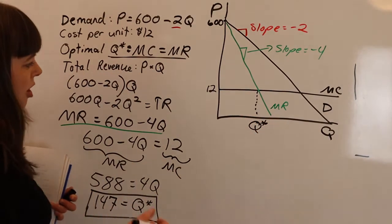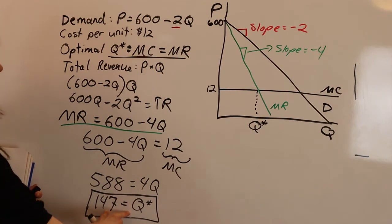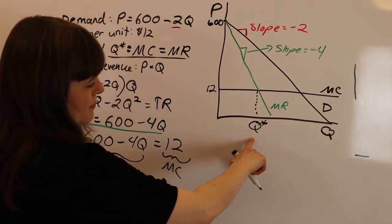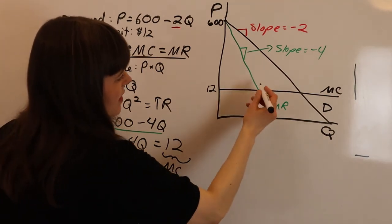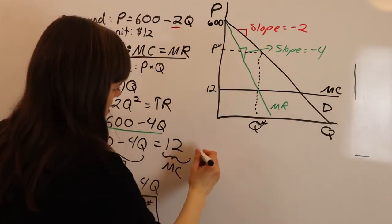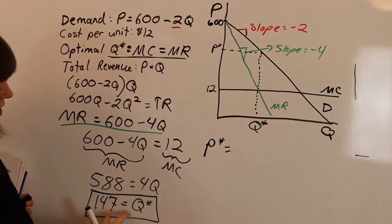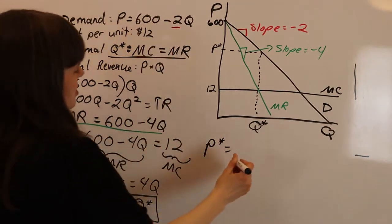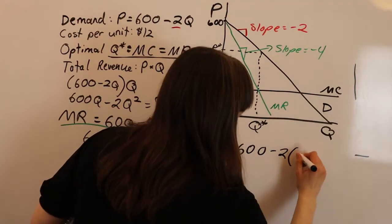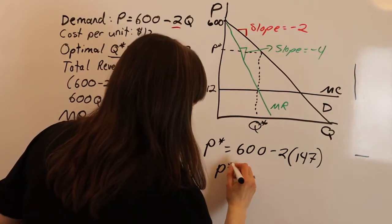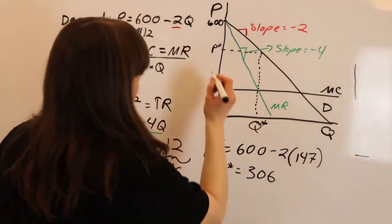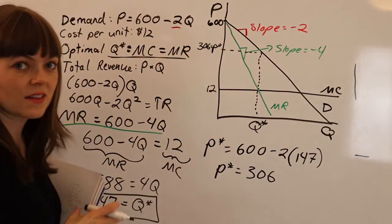What is our optimal price? At the optimal quantity, the price is read off the demand curve — that's the highest price the firm can charge at that quantity. So we find P* by plugging the optimal quantity into the demand function: 600 minus 2 times Q*, where Q* equals 147. Doing the math gives us an optimal price of $306.